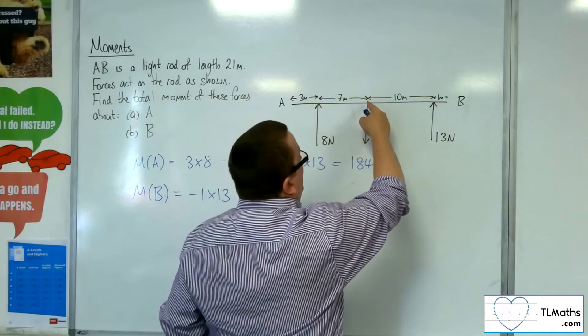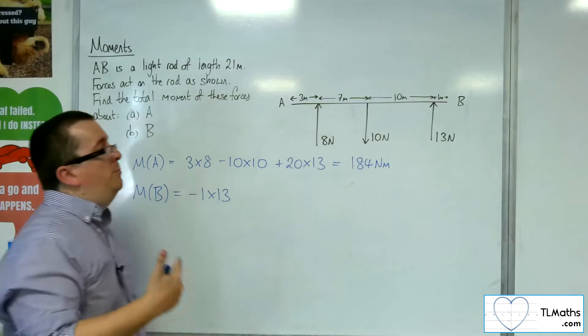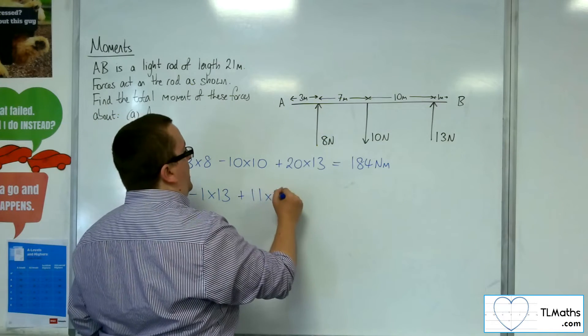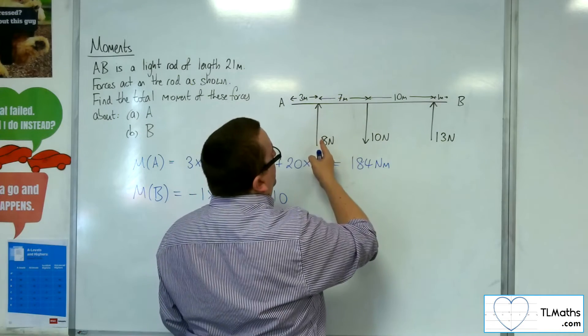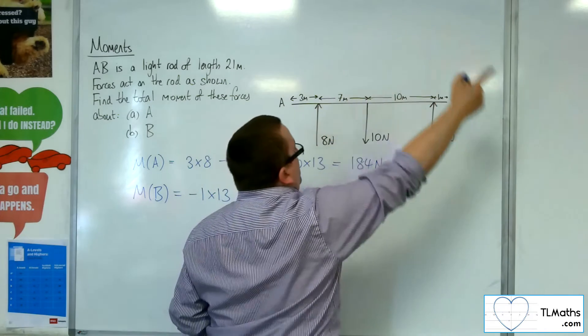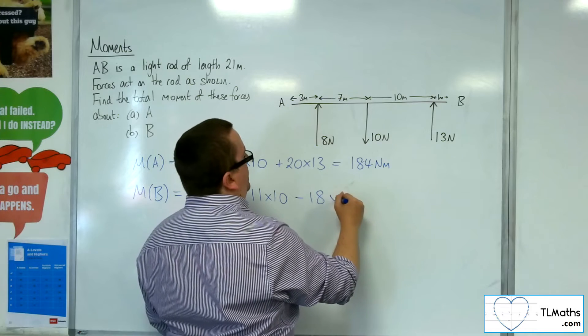Then we've got this force, which is 11 meters away, which is pushing around in an anti-clockwise direction, so positive. So we've got plus 11 lots of 10. And then finally, we've got this force, which is 18 meters away, and that's going around in a clockwise direction, so it would be negative. So take away 18 lots of 8.